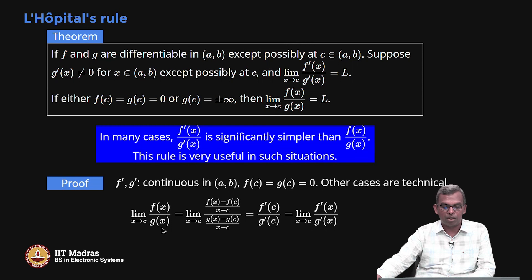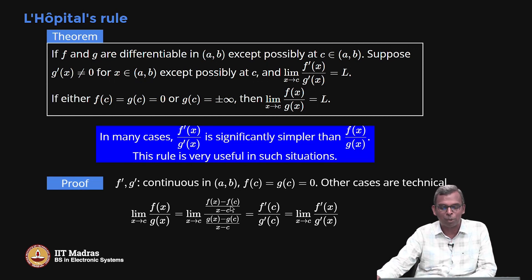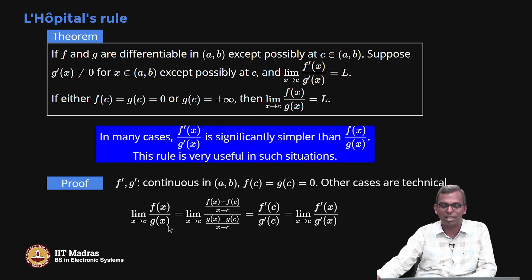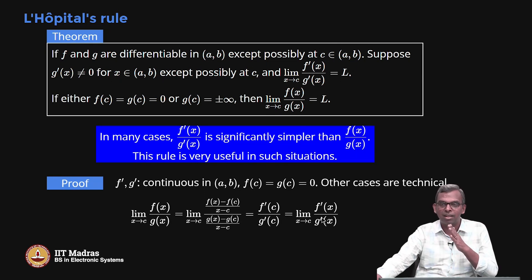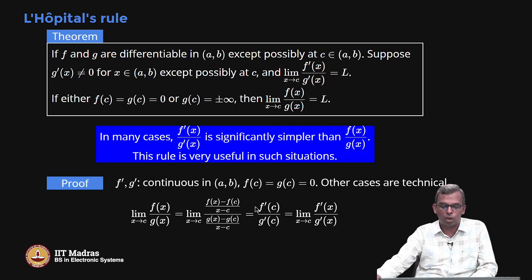The limit as x tends to c of f(x) by g(x) is the same as the limit of this rewritten ratio. How do we get this? It looks very strange, but these two are exactly the same. f(c) is 0, so that term is not there; g(c) is 0, so that is also not there; and the (x - c) terms cancel. So this complicated-looking ratio is actually the same as f(x) by g(x). Now, the limit as x tends to c of the numerator is nothing but f'(c), and the limit of the denominator is nothing but g'(c). Because f' and g' are continuous, the limit can be taken out, and you get the result. This concludes the proof for this special case.